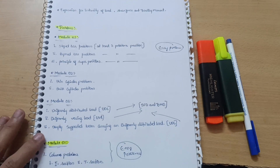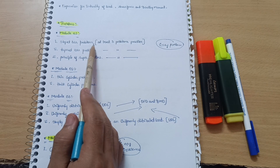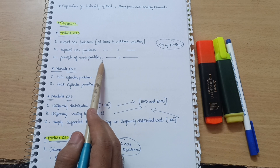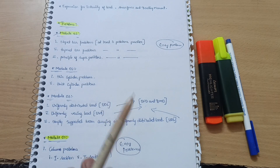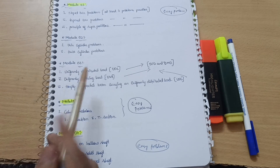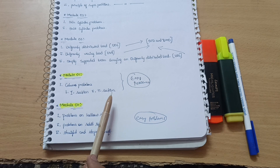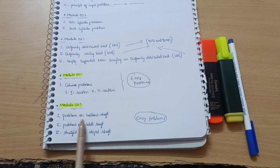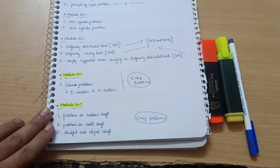For problems, I recommend starting with Module 1: stepped bar problems are very easy — practice at least three problems. Also practice tapered bar problems and problems on the principle of superposition. For the passing package, Module 5 column problems with I-sections and T-sections are also straightforward. Module 4 problems on hollow shaft, solid shaft, and stepped shafts are easier ones. So focus on problems from Module 1, Module 5, and Module 4.